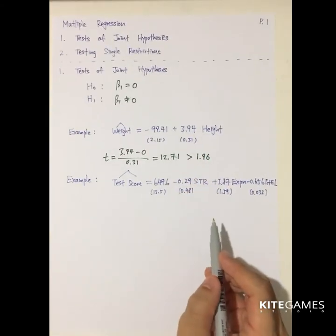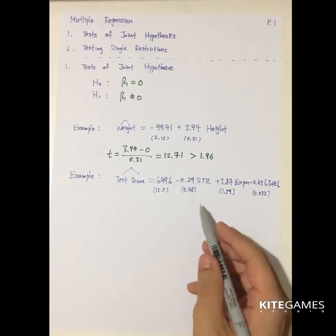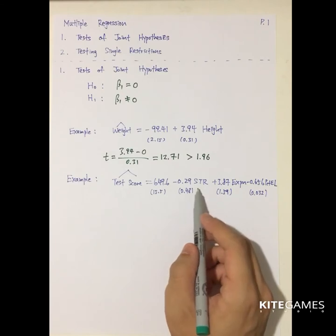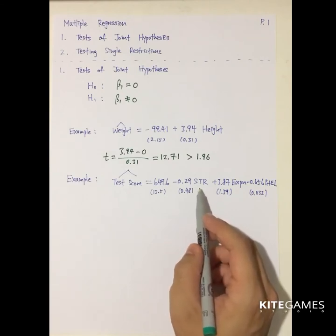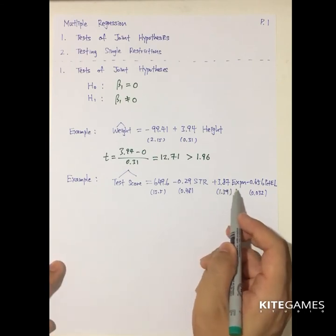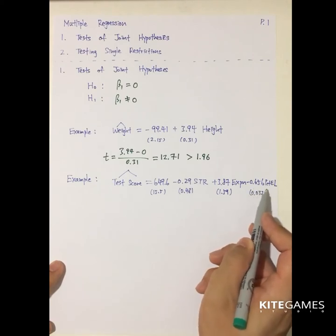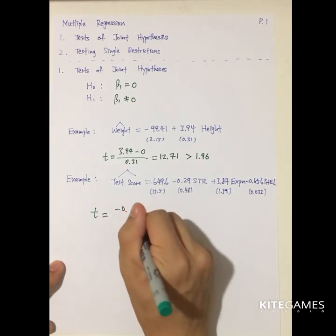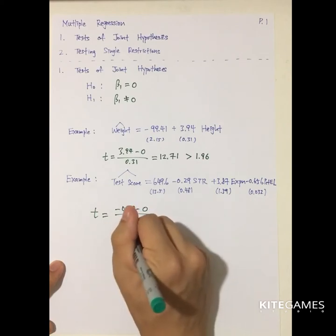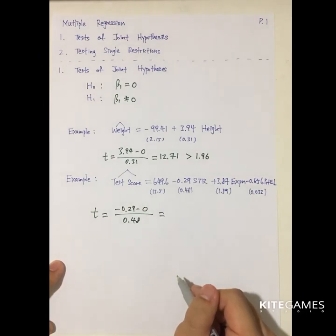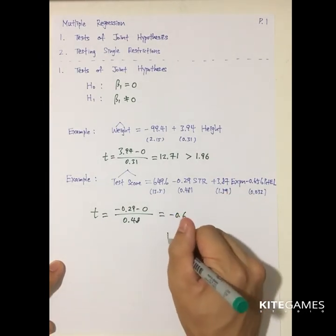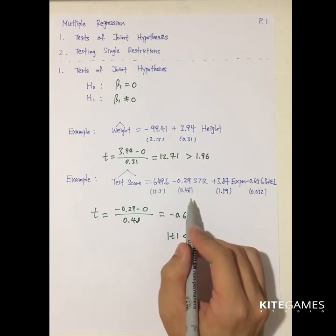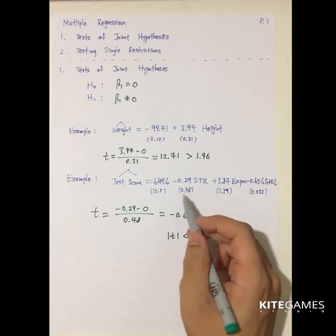But in multiple regression, if you do the t-test as usual, let's take a look. The test score equals some value minus 0.29 times STR (student-teacher ratio) — the larger the ratio, the more students or the fewer teachers — plus 3.87 times expenditure on education, minus 0.658 times the percentage of English learners. If I do the t-test for beta1-hat, I get negative 0.29 minus 0, divided by 0.48, giving a value of negative 0.6. The absolute value is less than 1.96, so this is not statistically significant. Should we ignore these parameters?